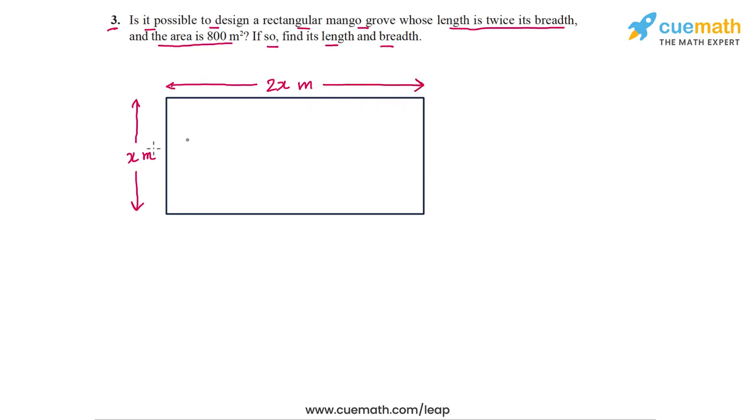So the length is 2x meters. And in terms of x, the area of this rectangular region will be x meters into 2x meters. So that's 2x² meters square. So the area of this rectangular region is 2x² meters square.